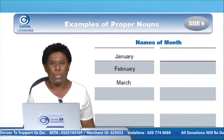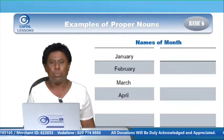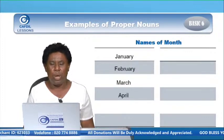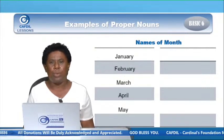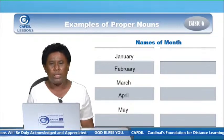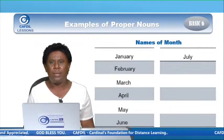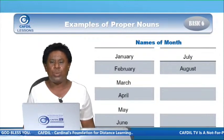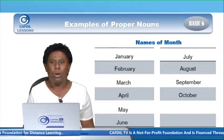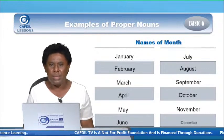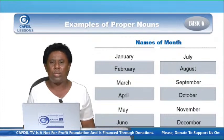March — also a particular name given to a month, starts with capital M, because it's a proper noun. We have April — begins with capital A, because it's a particular name given to that month, and it's a proper noun. May, June, July, August — all start with capital letters because they are proper nouns. We have September, October, November, December — all start with capital letters because they are proper nouns.